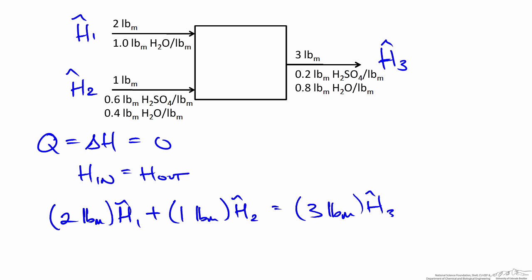On the inlet side, we know that both streams are at 100°F. So we should be able to use an enthalpy-concentration diagram to find the specific enthalpy of these solutions at a specific temperature and concentration. We don't know the temperature on the outlet side, but if we use the energy balance, we should be able to calculate H3. So we'll go to the enthalpy diagram to find values for H1 and H2.